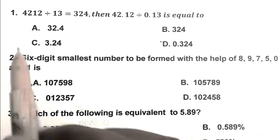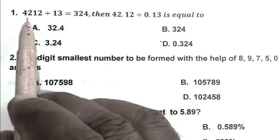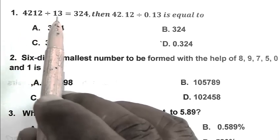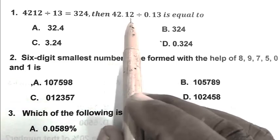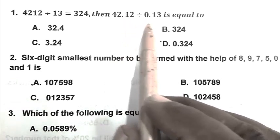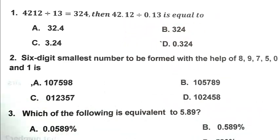Question number 1: 4212 divided by 13 equals 324, then 42.12 divided by 0.13 is equal to what?